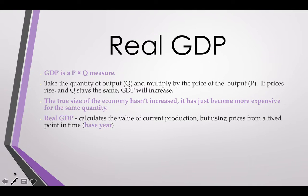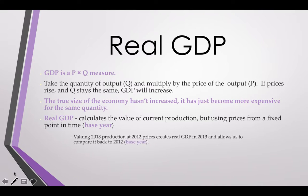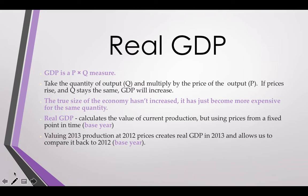When we look at real GDP, we take production in a particular year and use prices from a fixed point in time — this is what we refer to as a base year. If prices are equal across the board and our number is greater, there must be more output. So if we look at production numbers from 2013 but use prices from 2012, this creates our real GDP in 2013, and we can say compared to 2012, whether we grew as an economy.